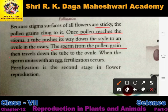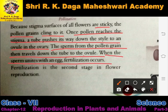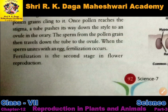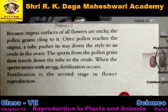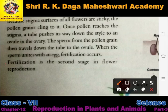The sperm from the pollen grains then travel down the tube to the ovule. When the sperm unites with the egg, fertilization occurs. Jab ye pollen grains ovary mein aa jate hain aur egg ke saath fuse ho jate hain, to fertilization complete ho jata hai — the male reproductive part fuses with the female reproductive part.